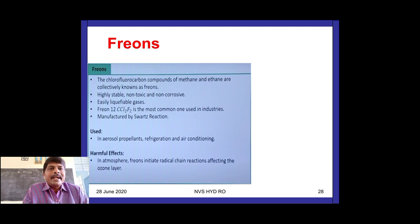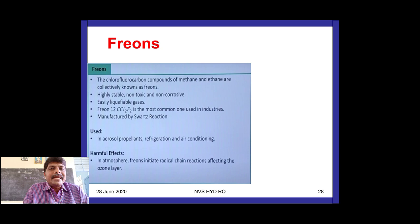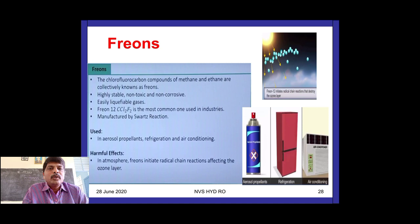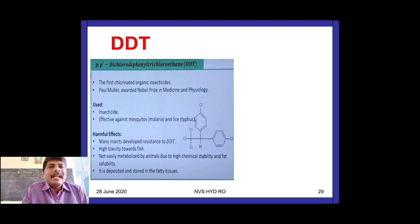Next: Freons — chlorofluorocarbons (CFCs). The chlorofluorocarbons of methane and ethane are collectively known as Freons. They are highly stable, non-toxic, non-corrosive, and easily liquefiable gases. Freon-12 (CCl2F2) is the most commonly used, manufactured by the Swarts reaction, used in aerosol propellants, refrigeration, and air conditioning. However, in the atmosphere Freons initiate radical chain reactions affecting the ozone layer — Freons are mainly responsible for ozone layer depletion, allowing UV radiation to reach the earth's surface.